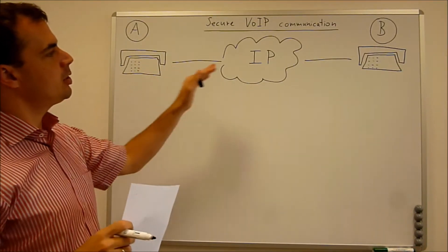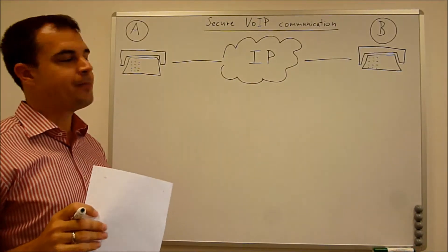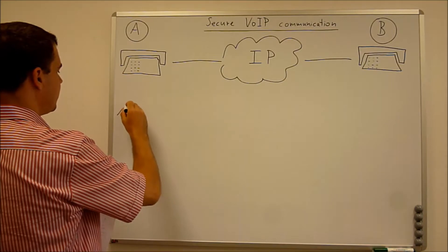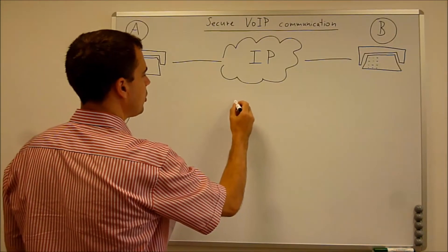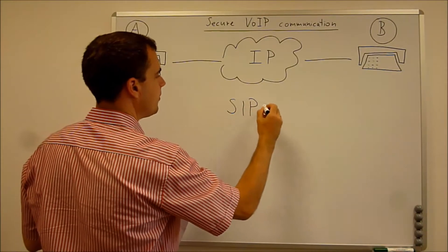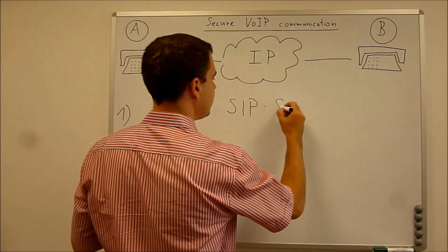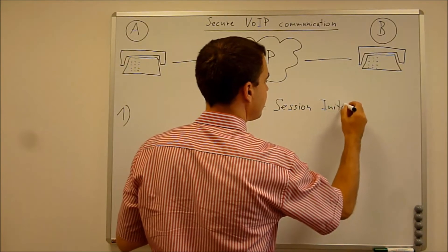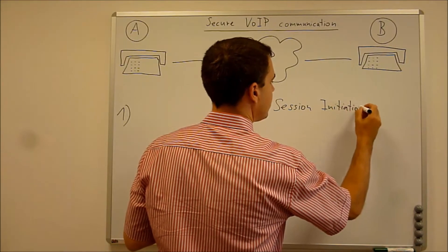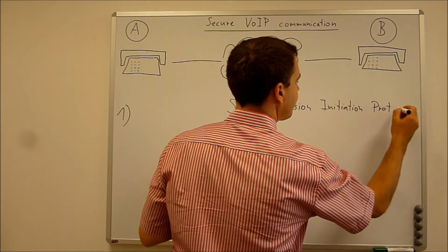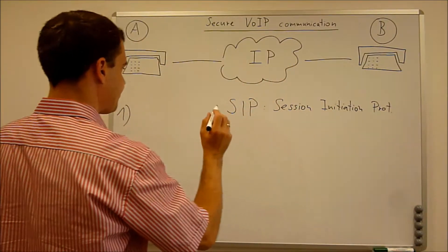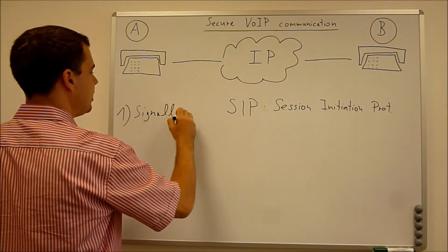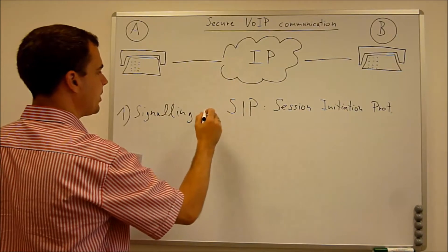So in the communication of IP telephones there are two items. The first item is the signaling. That is done with a protocol called SIP. This stands for Session Initiation Protocol. And it is an open standard. So that is used for the signaling. That means everything which is even before you can hear some voice.